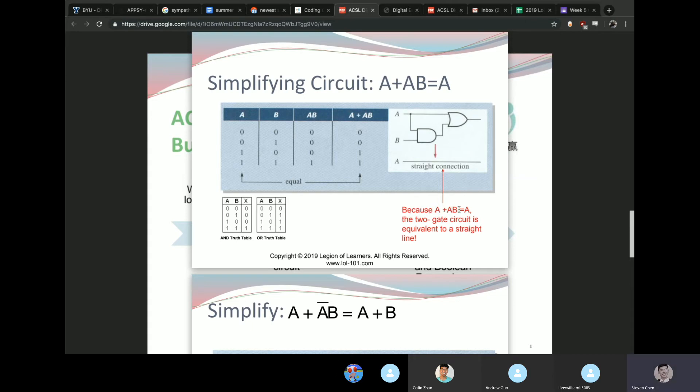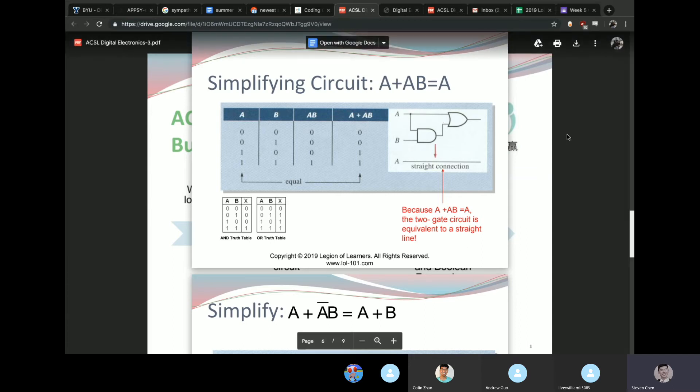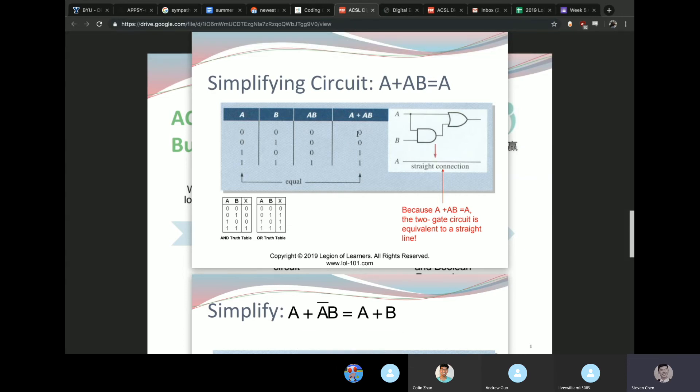And then since A plus AB equals A, this circuit right here is equivalent to just the straight line. Basically the output for this will always be just A. As you can see here, A is 0, 0, 1, and 1. Down here it's the same 0, 0, 1, and 1. You don't have to do a bunch of unnecessary operations when you could just simplify it into a much more basic solution.